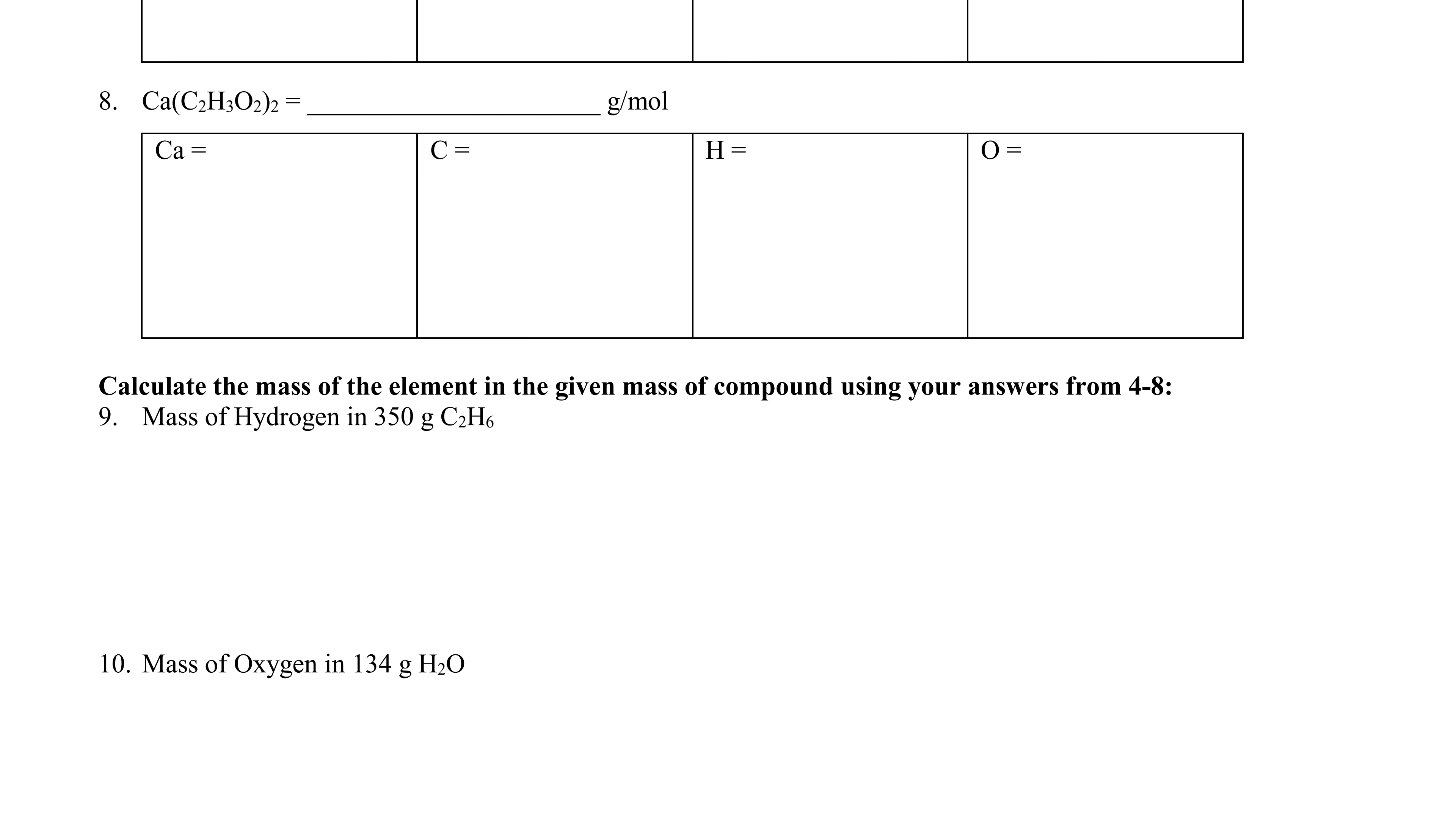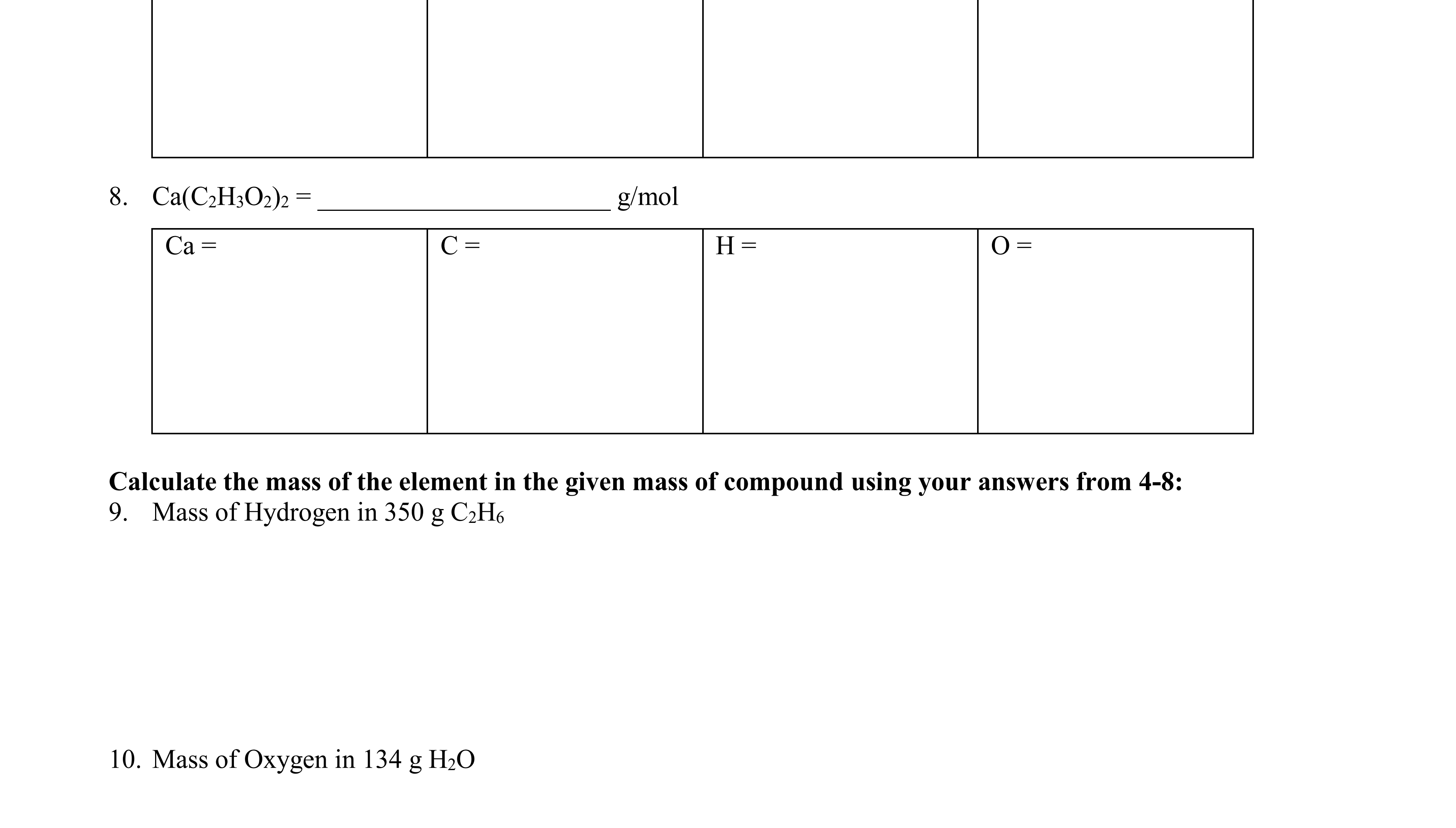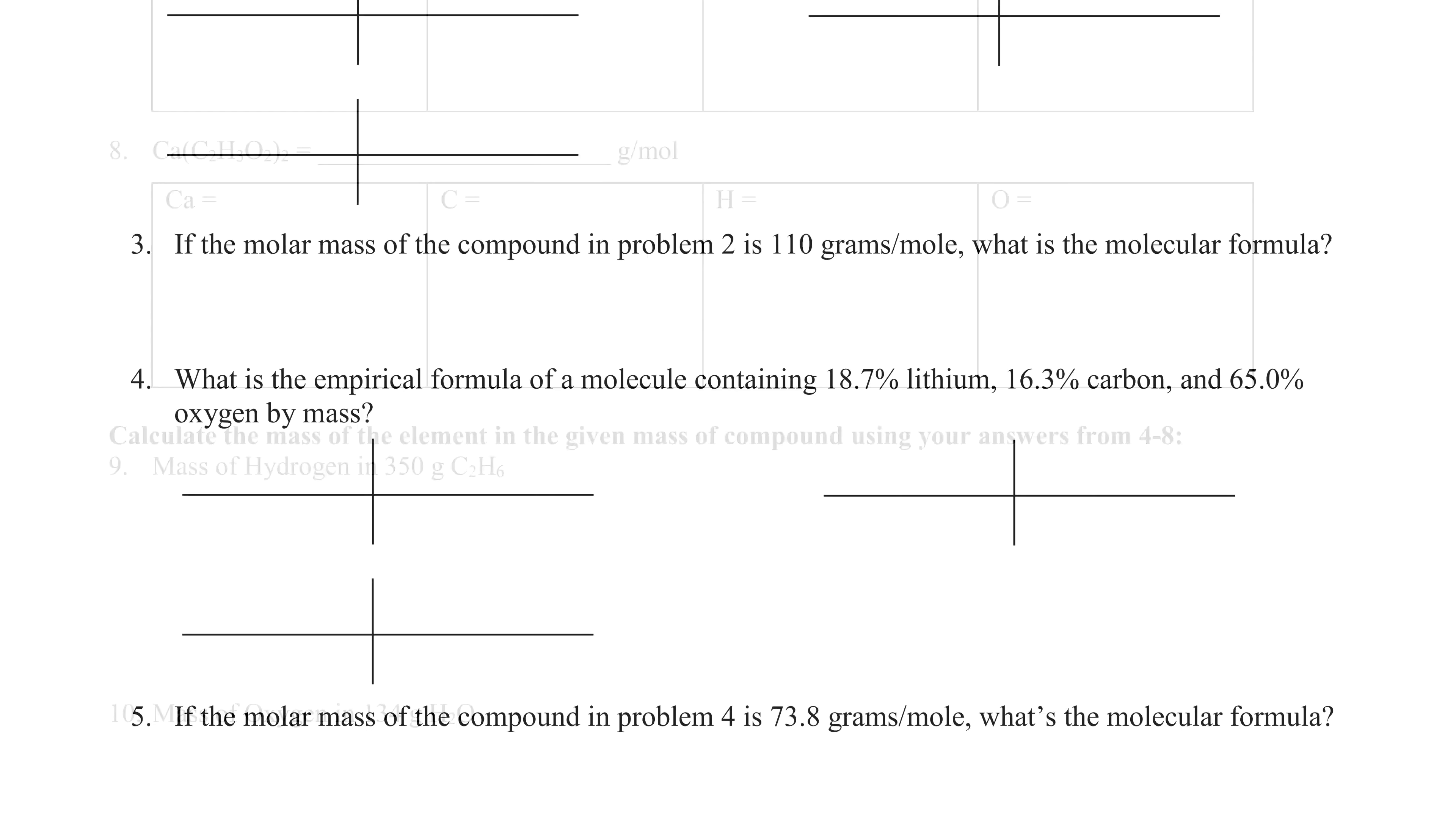And then number 9, 10, 11, 12, 13. Use those same formulas from 4, 5, 6, 7, 8. And it asks, okay, based on that formula and its percent composition, what's the mass of one of the components, in this case hydrogen, in a whole 350? So I find the percent that is hydrogen. Turns out percent hydrogen was 20% back in problem number 4. And that percent, 20% hydrogen is of C2H6. I have 350 grams of it. So I do 20% times 350.